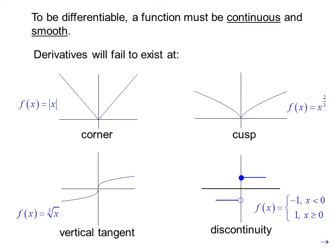At a discontinuity, such as this piecewise graph of f(x) = -1 where x < 0 and 1 where x ≥ 0.